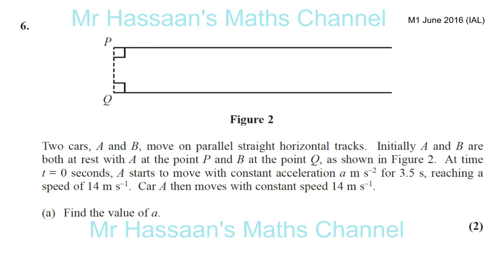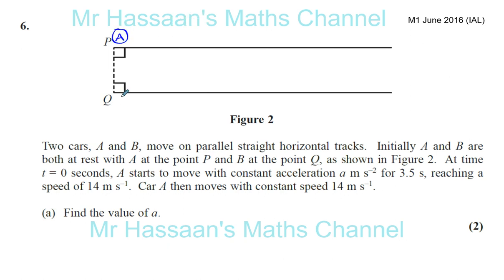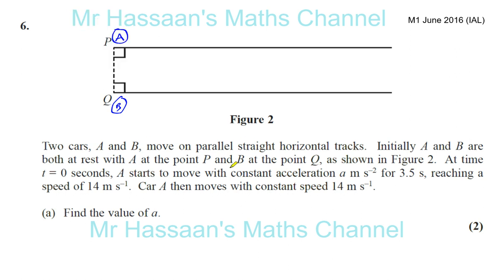So we have question number 6 from June 2016 IAL. Two cars A and B move on parallel straight horizontal tracks. Initially, A and B are both at rest with A at point P and B at point Q. So we have A over here and B over here. At time T equals 0, A starts to move with constant acceleration A meters per second for 3.5 seconds. It tells us it moves with constant acceleration, so we can use SUVAT equations for this.